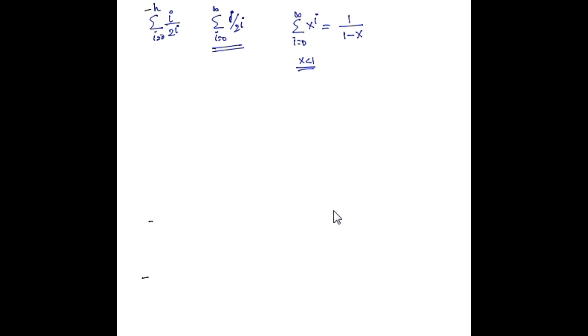We want to find the sum of i divided by 2^i where i goes from 0 to h, and find an upper bound for it. We know how to find the summation of 1/2^i from i equals 0 to infinity. We use the fact that the summation of x^i for i from 0 to infinity converges to 1/(1-x) when x is less than 1. But we need the summation of i times x^i, so we differentiate both sides. Differentiating gives the summation of i times x^(i-1) equals 1/(1-x)^2.